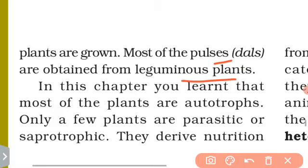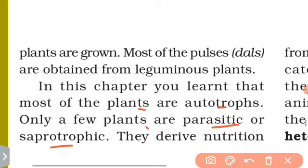The best thing is that most plants are autotrophs. In this chapter we learn that plants are autotrophs — they make their own food. However, a few plants are parasitic and saprophytic, deriving nutrition differently.